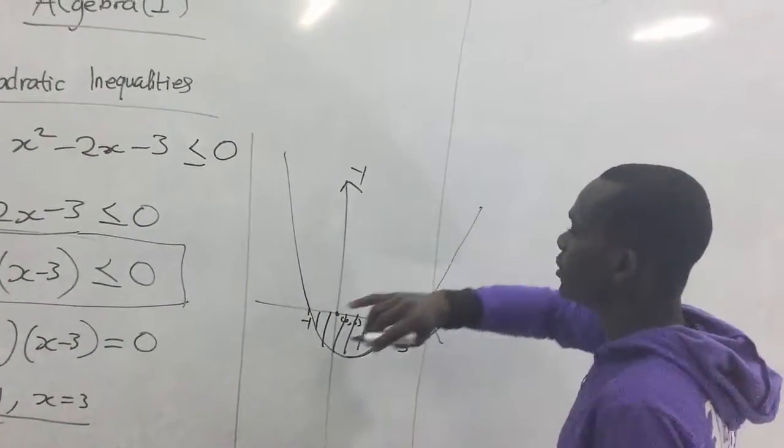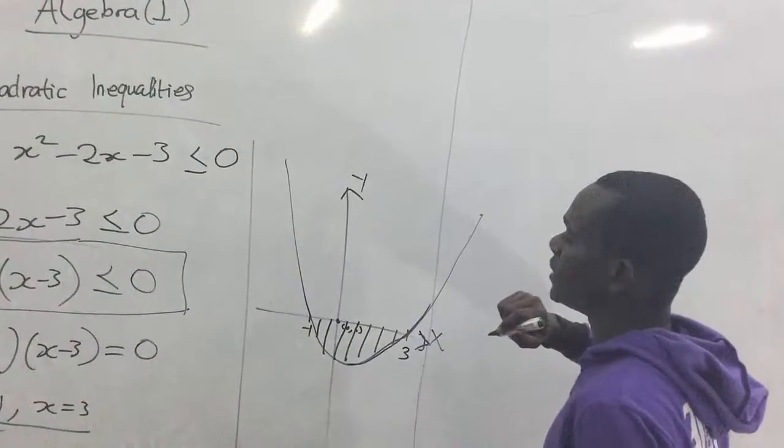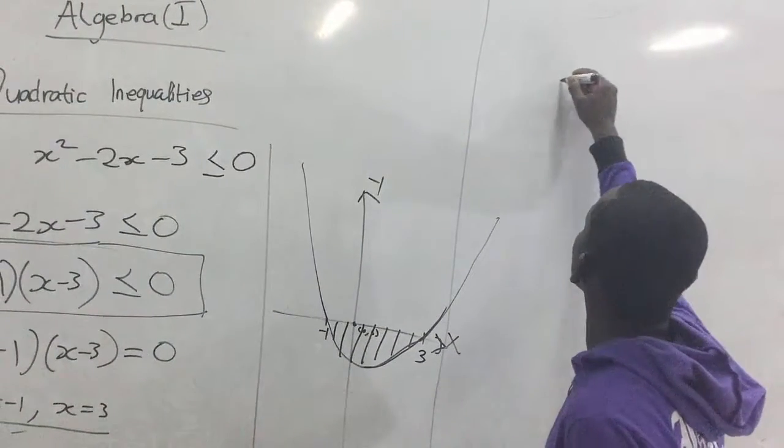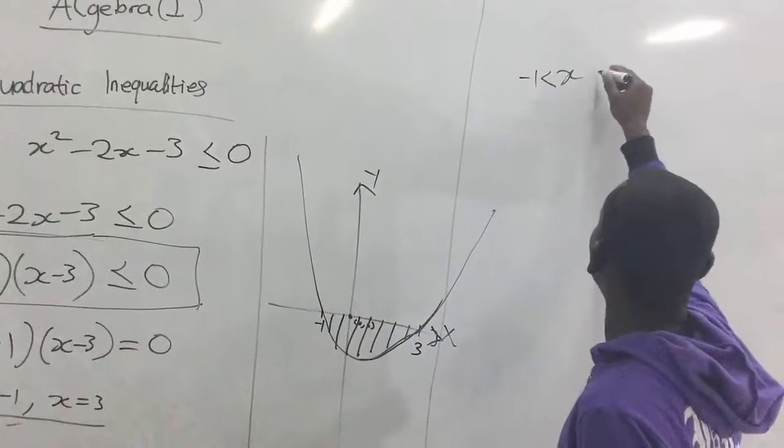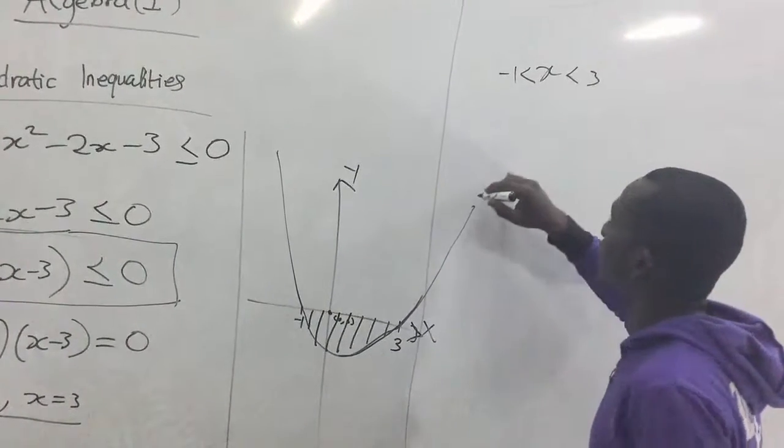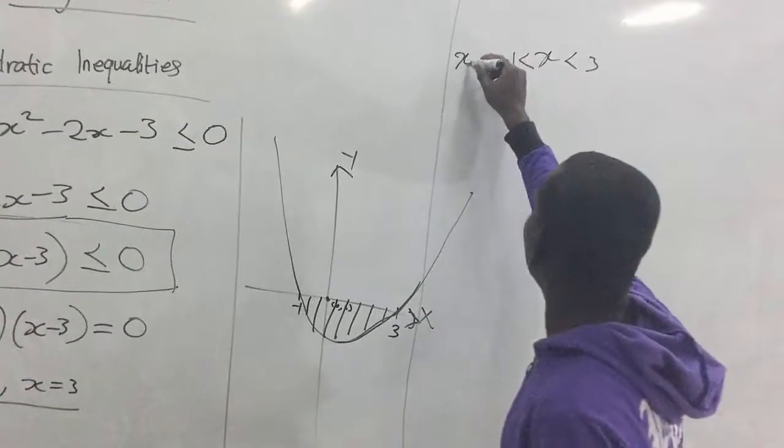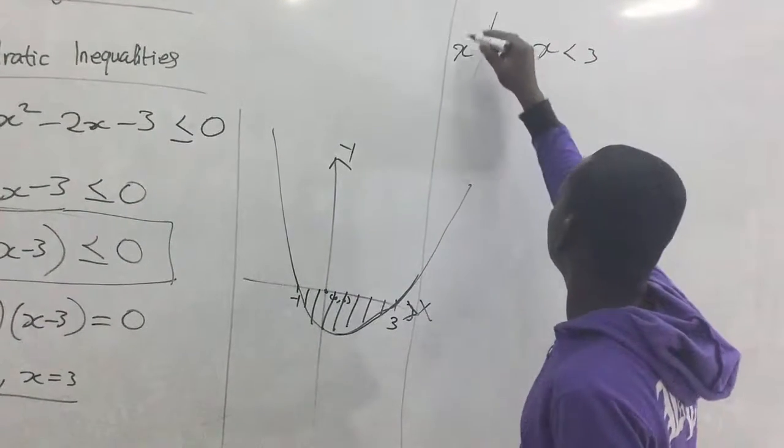So, we are picking it from negative one towards three. So, we can say the solution set for this inequality is x greater than or equal to negative one and less than or equal to three.